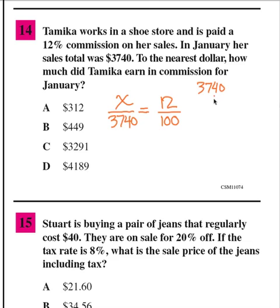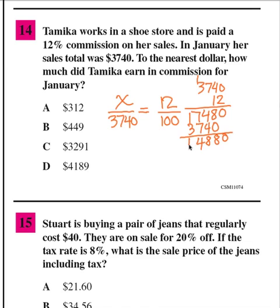3,740 times 12: 2 times 0 is 0, 2 times 4 is 8, 2 times 7 is 14 carry 1, 2 times 3 is 6 plus 1 is 7. Then 1 times 3,740 shifted gives 37,400. Adding and dividing by 100 — moving the decimal point twice — to the nearest dollar her commission is $449. The answer is B.